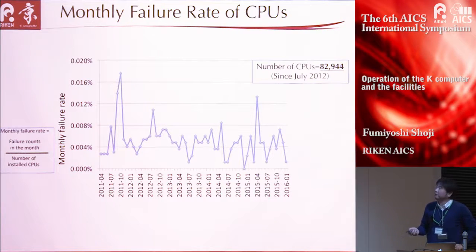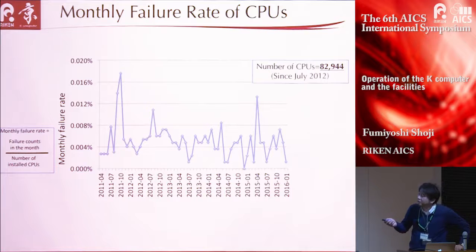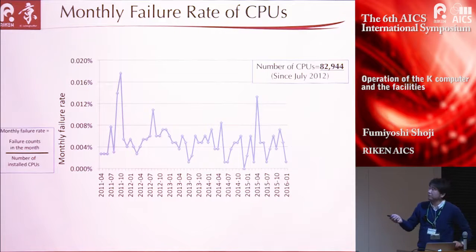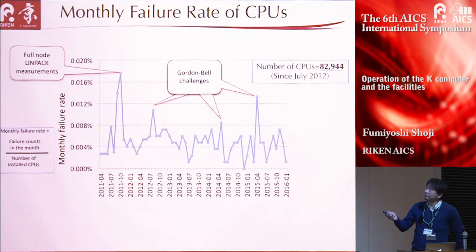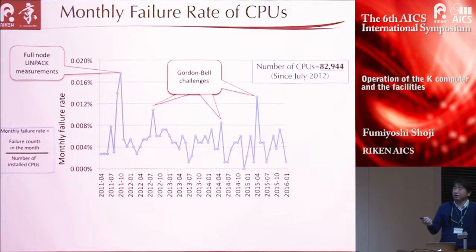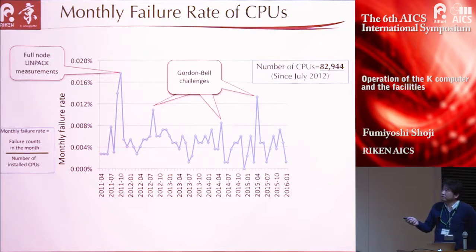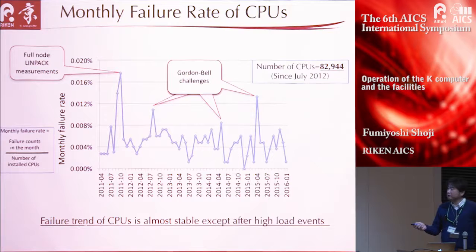I will show you the failure rate of major parts. This is the monthly failure rate of CPU, defined as failure counts in the month divided by the number of installed CPUs. You can see some spikes that correspond to high-load events—for example, the full-node LINPACK measurement where the K-computer achieved over 10 petaflops, and points corresponding to the Gordon Bell challenge. The failure trend of CPU is almost stable except after high-load events.